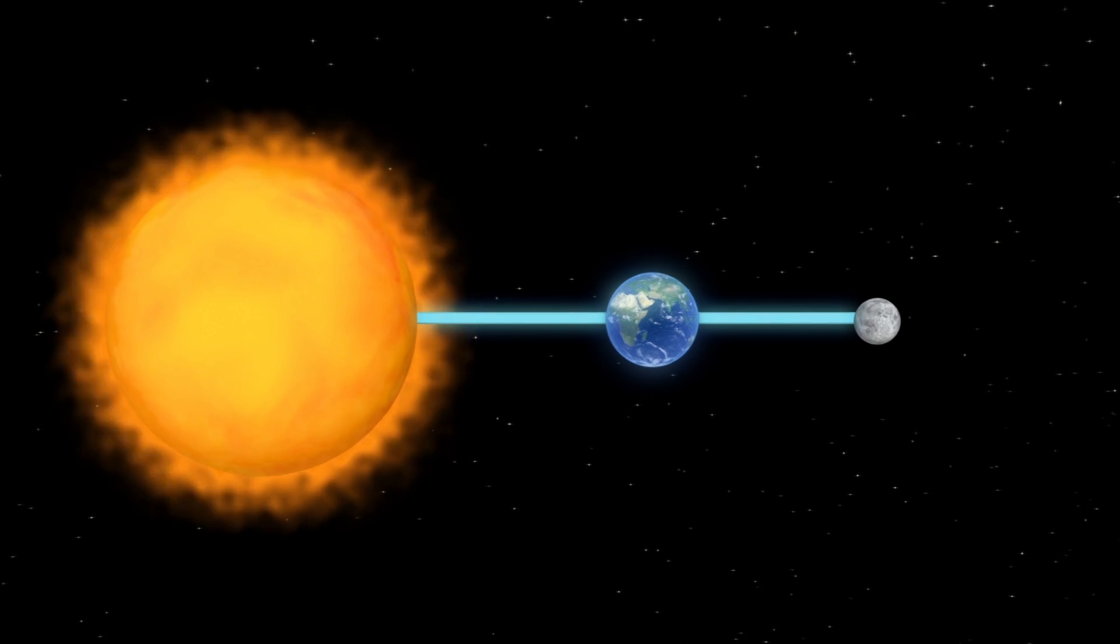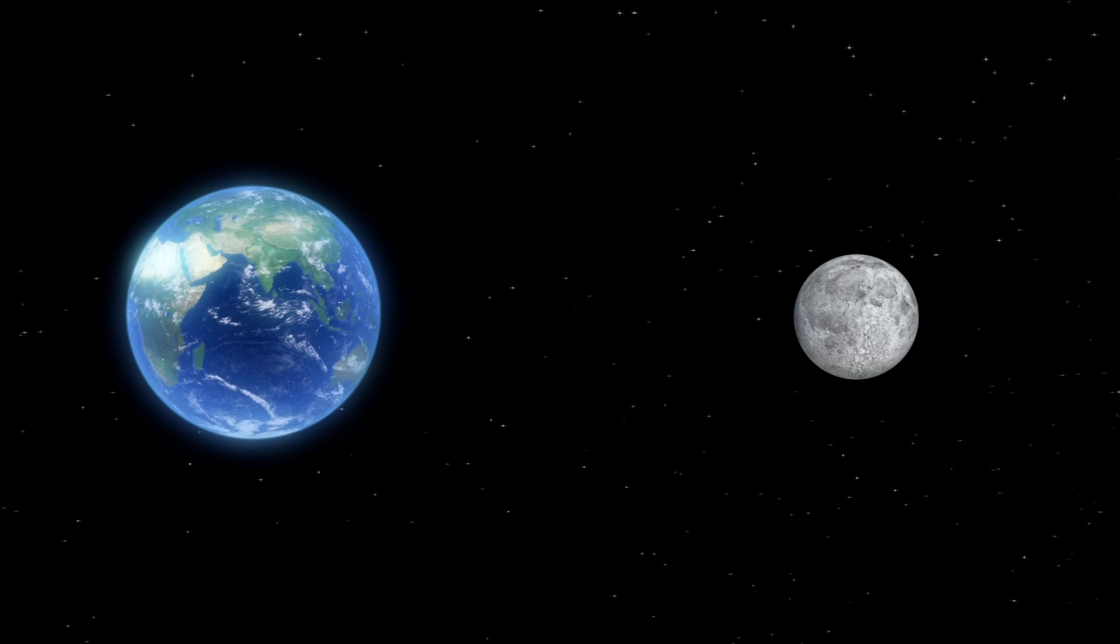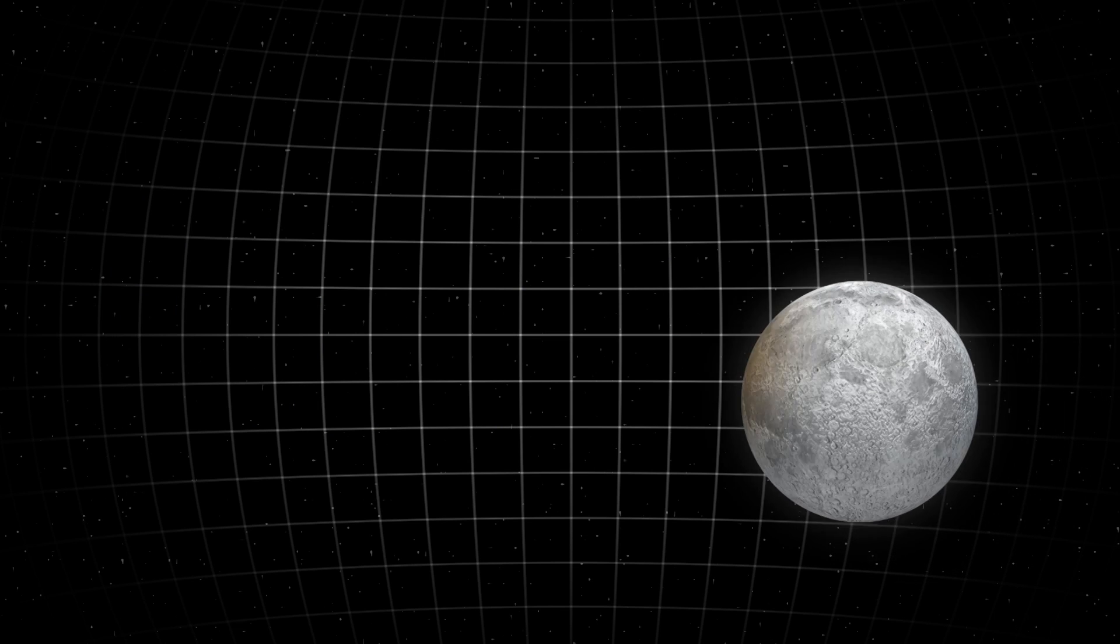Writing on EarthSky.org, astronomer Bruce McClure says the lunar eclipse on July 27th will also be an apogean moon when the Earth is at its farthest point from the moon.